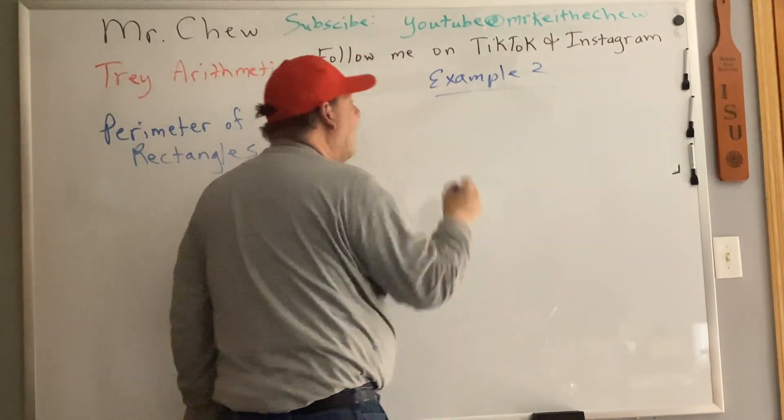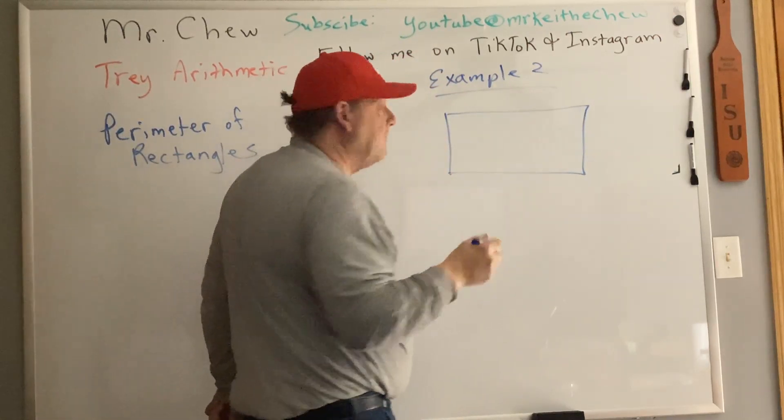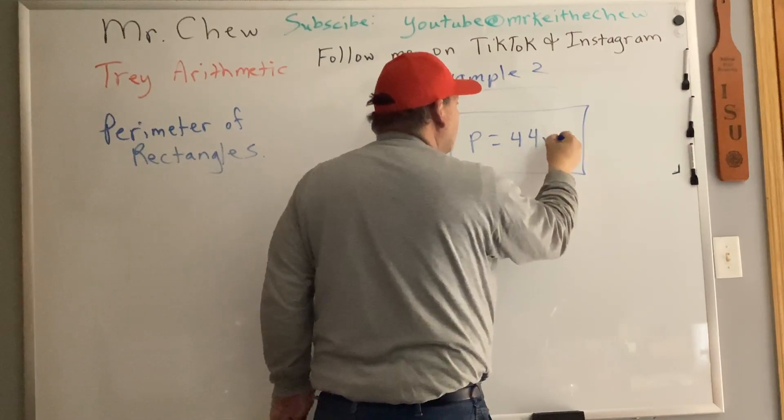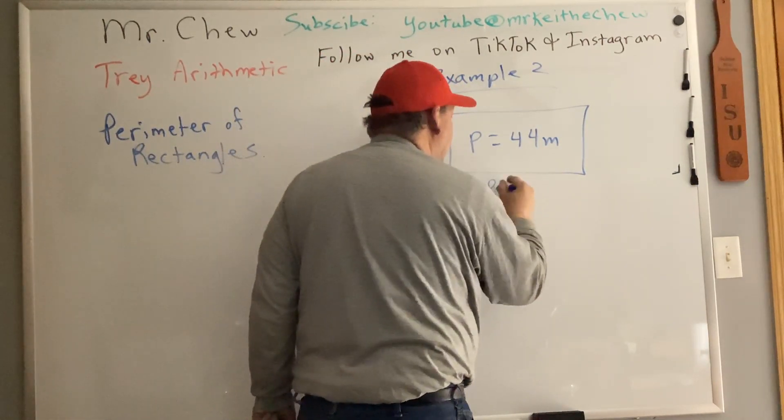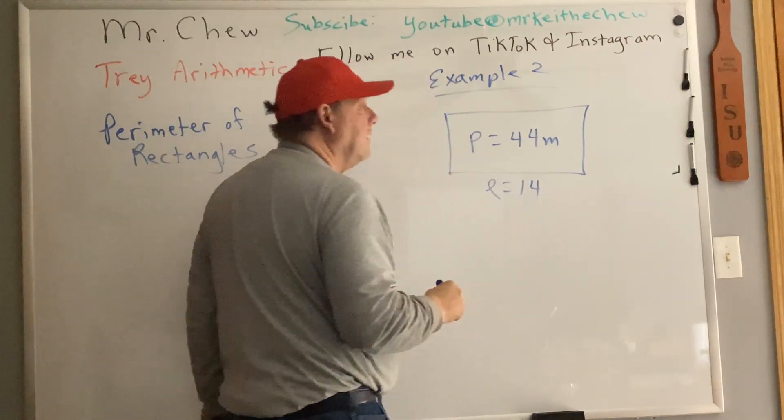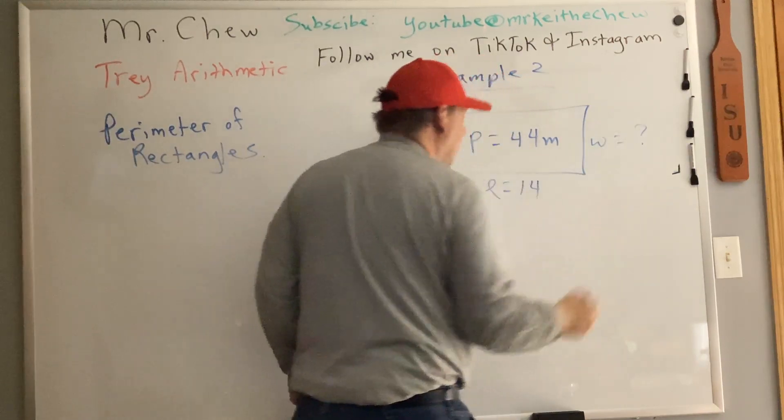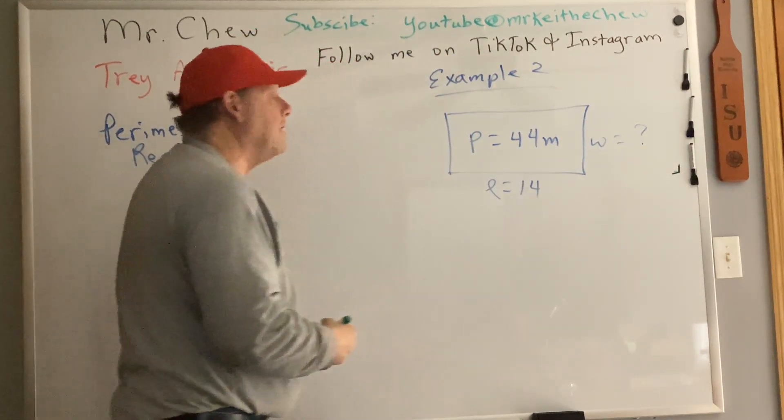So in example two, we have a rectangle and we're told the perimeter of that rectangle is 44 meters. We're told that this length is 14 and we're asked, what is this width?